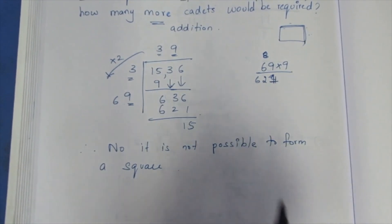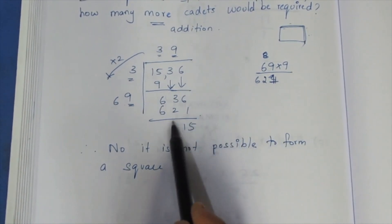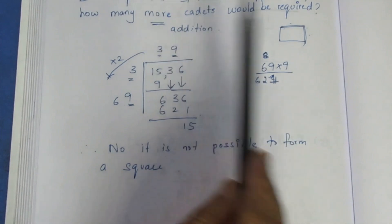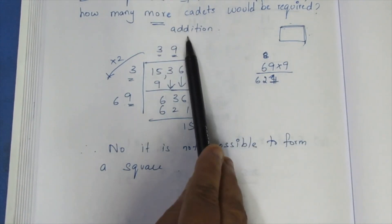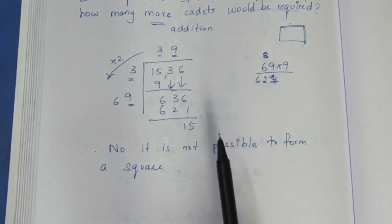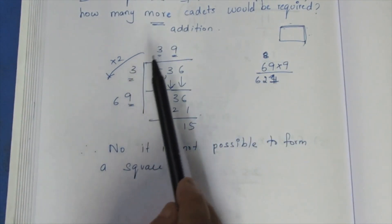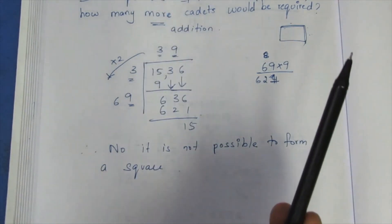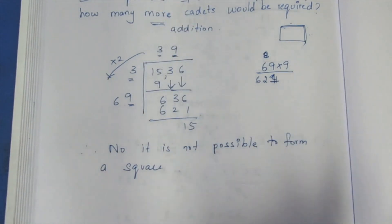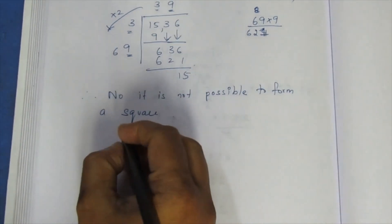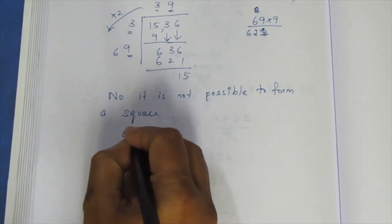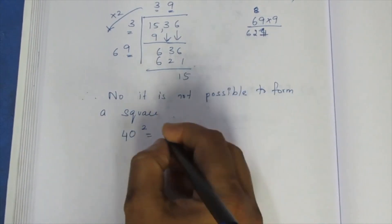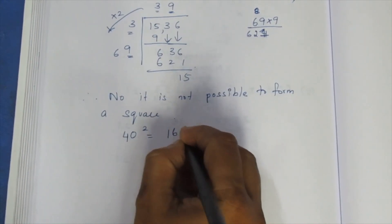If you use subtraction you get the previous perfect square, but addition will allow you to form a square. The current root gives approximately 39, so the next square number is 40. 40 squared is 1600. So to form a square, you need to add cadets to reach 1600: that means adding 64 cadets.